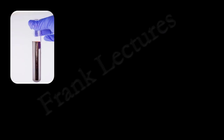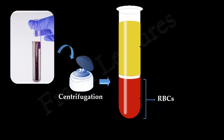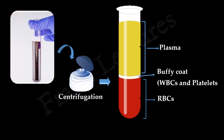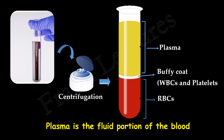When a blood sample is centrifuged in a glass tube, the red blood cells sink to the bottom of the tube, because among whole blood components red blood cells have the highest density. Plasma forms a layer on top because it is less dense. White blood cells and platelets form a very thin buffy coat layer between RBCs and plasma, because they are less dense than RBCs but denser than blood plasma. So now we know that plasma is the fluid portion of the blood.